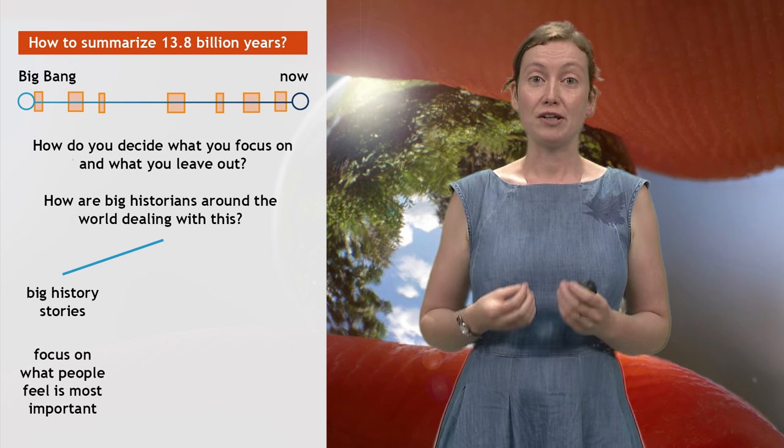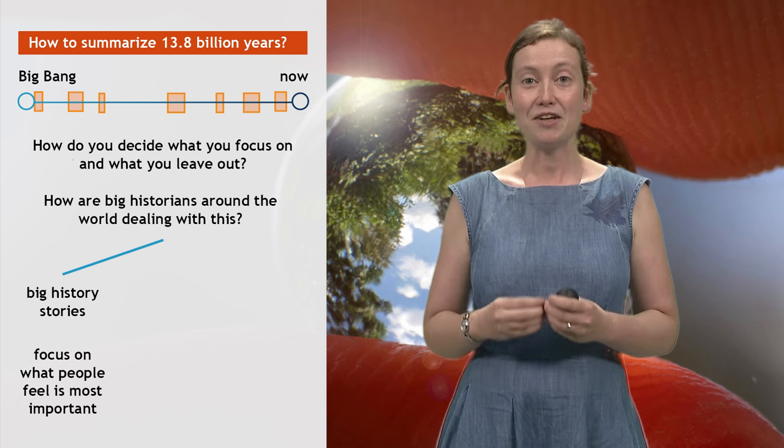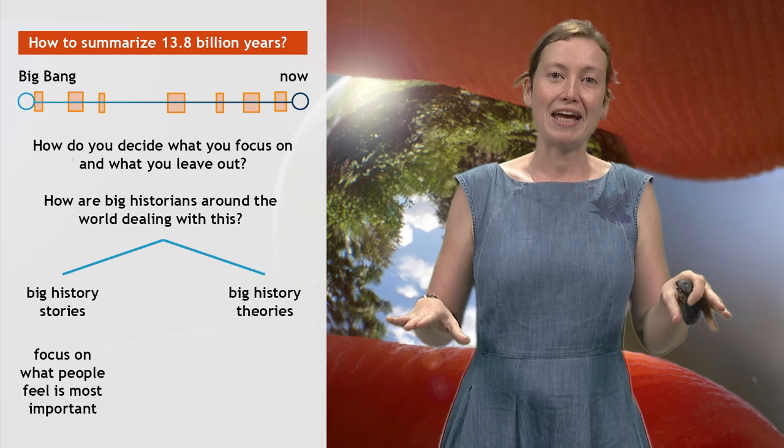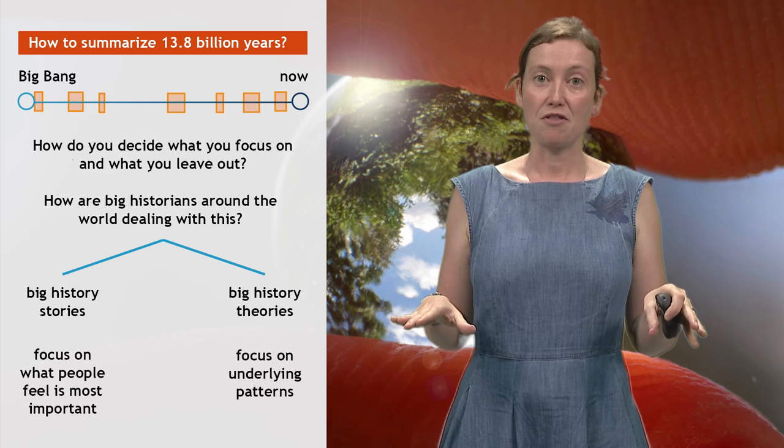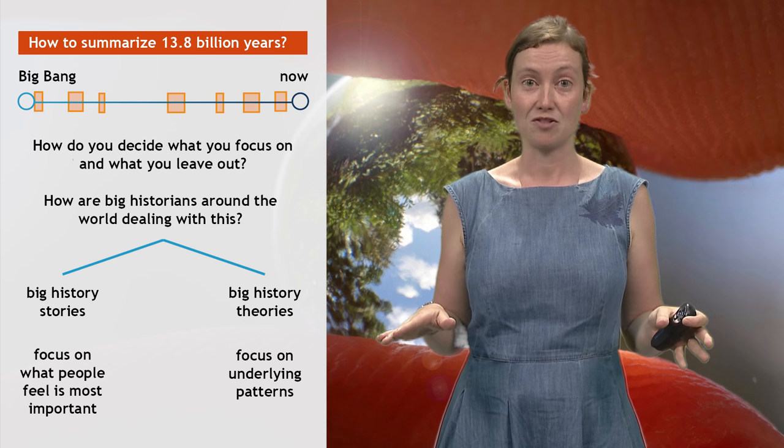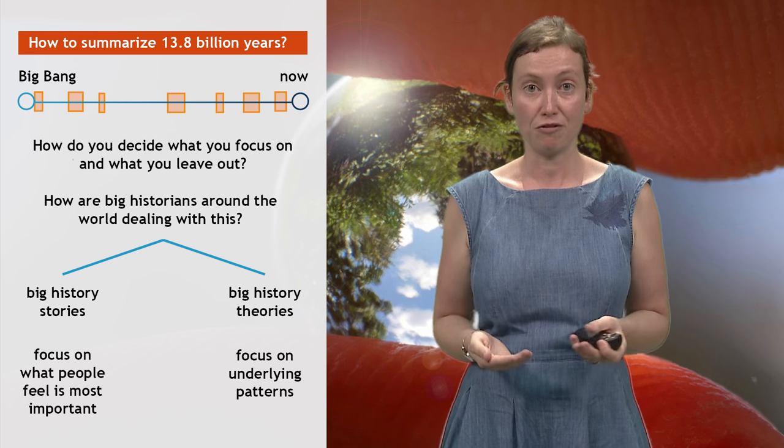Other big historians, quite often those based in science departments, use a different approach. They construct big history theories. They focus on the underlying patterns in big history, and on the things that might be able to support or refute ideas about these patterns—much like, for instance, Big Bang cosmology, plate tectonics, and the theory of evolution do.